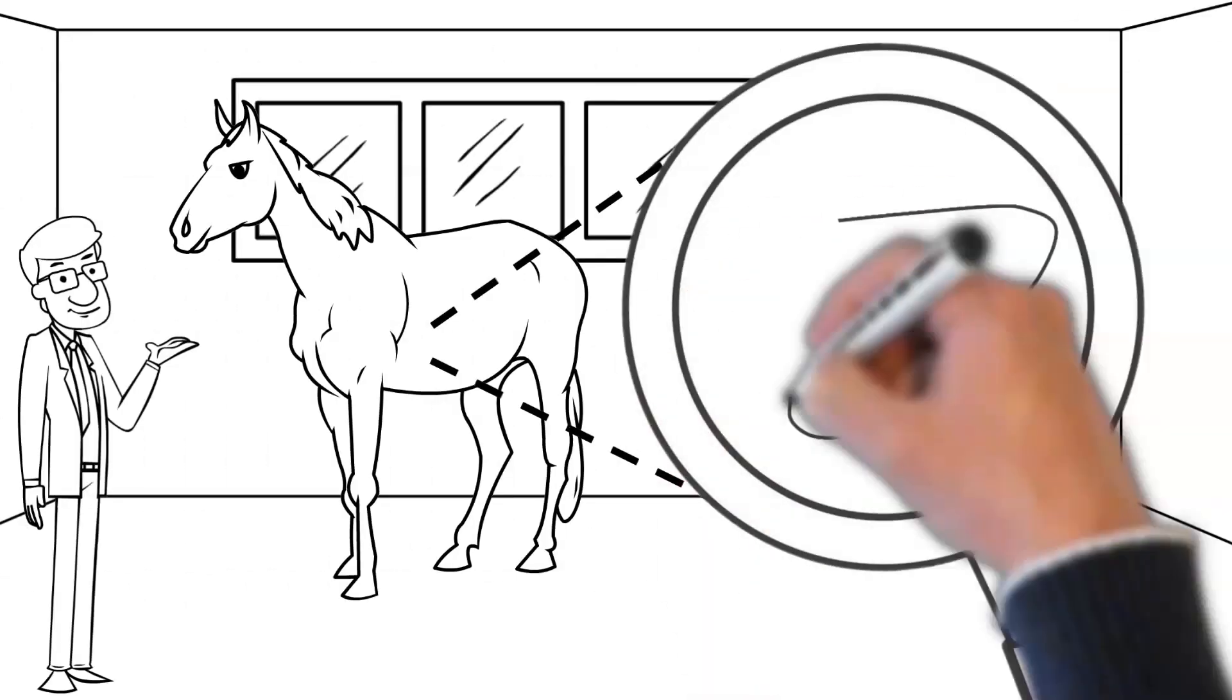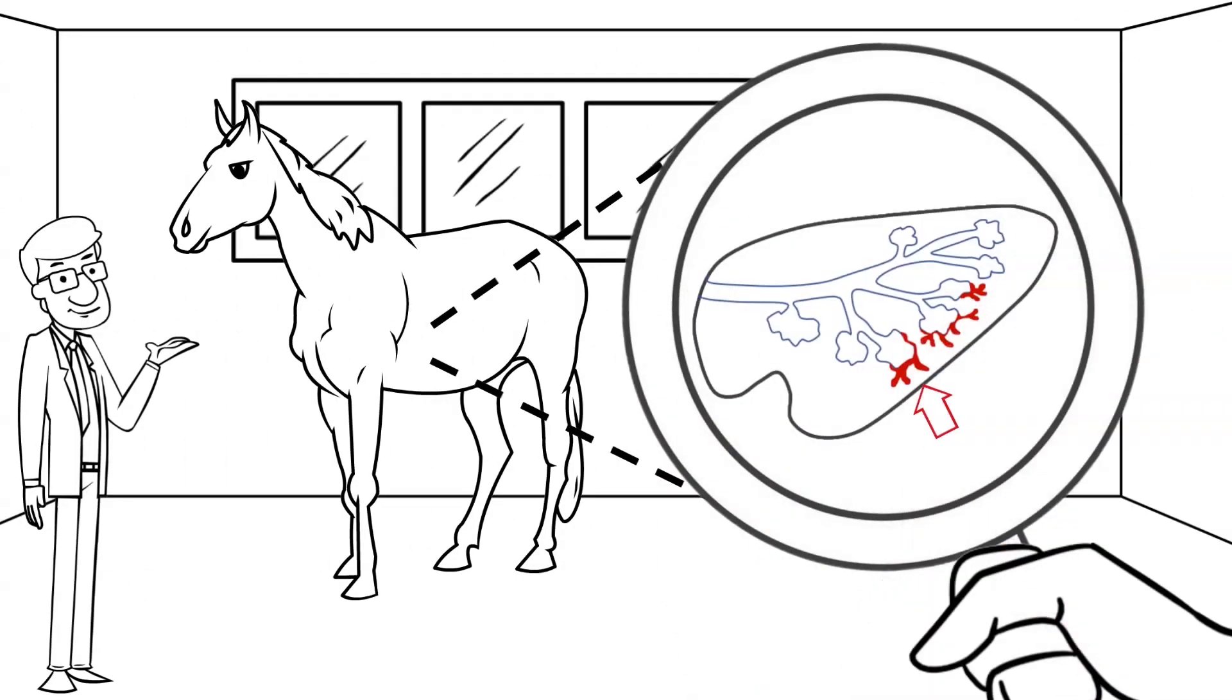EIPH results when small blood vessels deep in the lungs rupture, causing red blood cells to spill into the airways during intensive exercise.